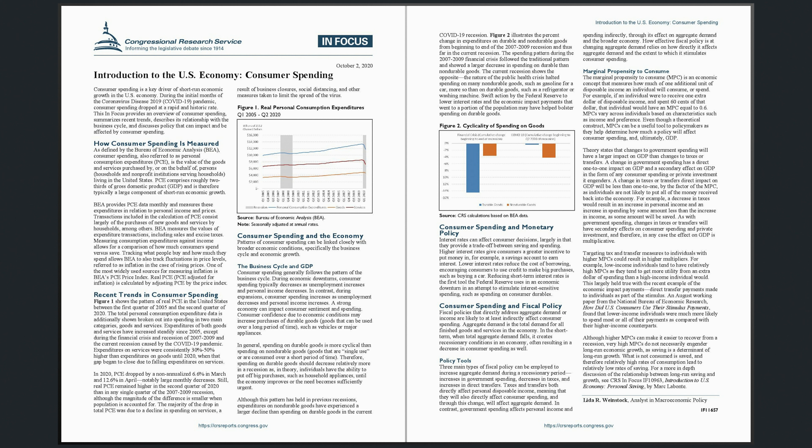Consumer Spending and Fiscal Policy. Fiscal policies that directly address aggregate demand or income are likely to at least indirectly affect consumer spending. Aggregate demand is the total demand for all finished goods and services in the economy. In the short term, when total aggregate demand falls, it creates recessionary conditions in an economy, often resulting in a decrease in consumer spending as well. Three main types of fiscal policy can be employed to increase aggregate demand during a recessionary period: increases in government spending, decreases in taxes, and increases in direct transfers. Taxes and transfers both directly affect personal disposable income, meaning that they will also directly affect consumer spending, and through this change, will affect aggregate demand.